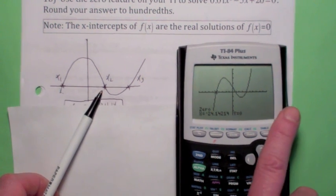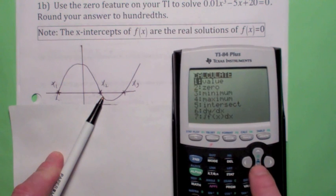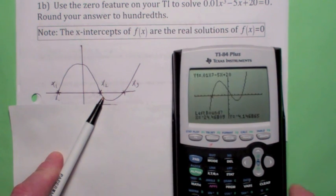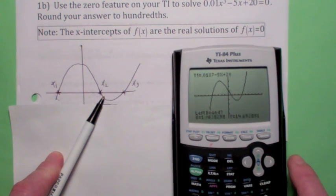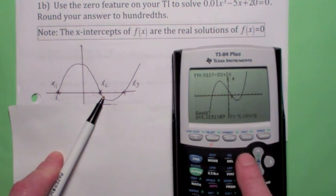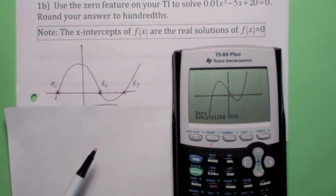How would you approximate this x-intercept, or this solution to the equation? You'd go 2nd calc, select 0, hit enter. Now remember, it's a 3-step process. You have to get to the left of it, using your arrow keys. Hit enter once. Now you get to the right of it, using your arrow keys, hit enter a second time. Now, get close to it, hit enter a third time. I get about 4.14, rounded to hundredths.